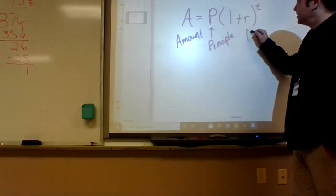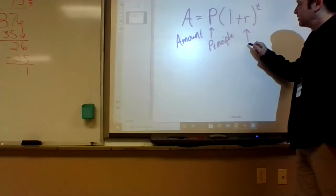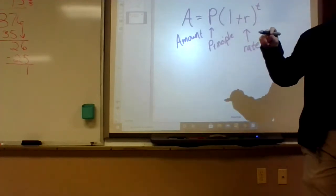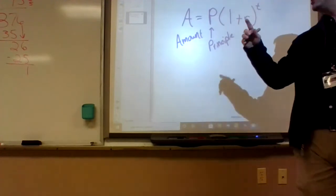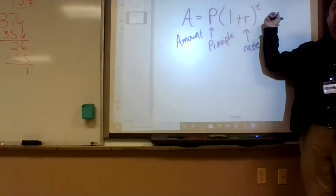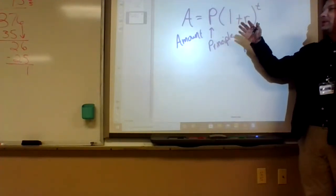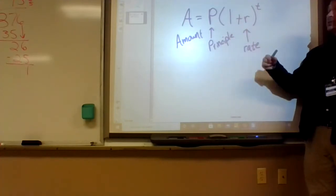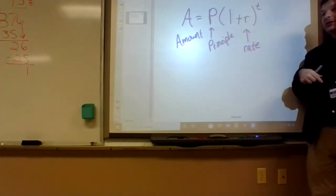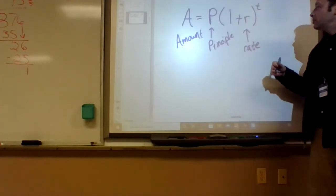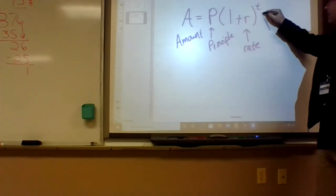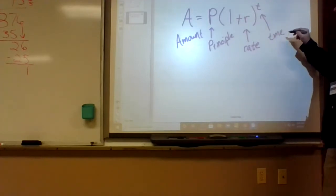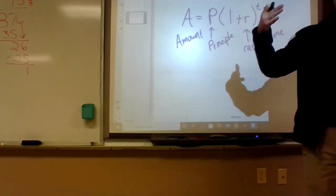R is the rate — the rate of interest if we're talking about money. This formula could also apply to populations. So if the population increases 4% every year, that's your R. T stands for time, usually measured in years when we're talking about money.